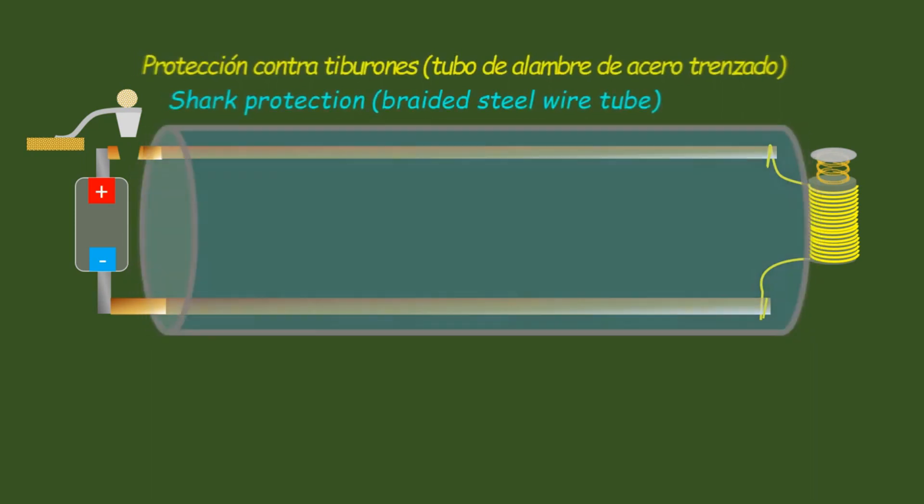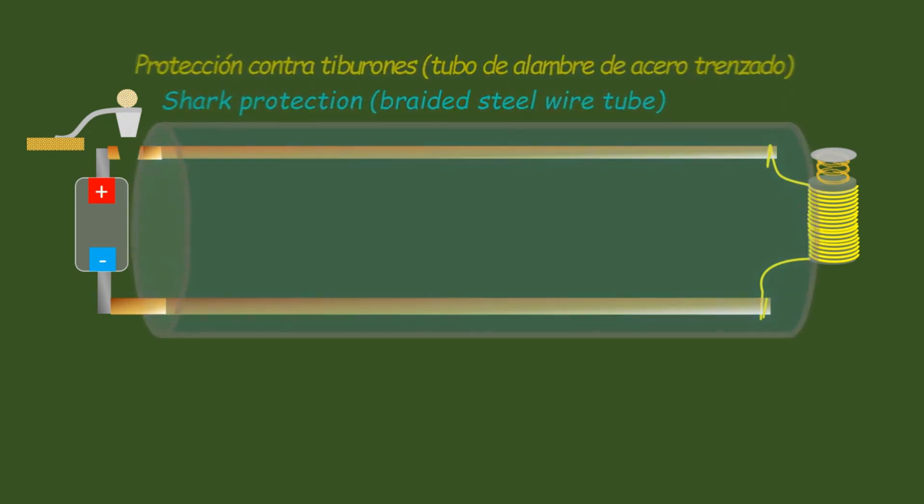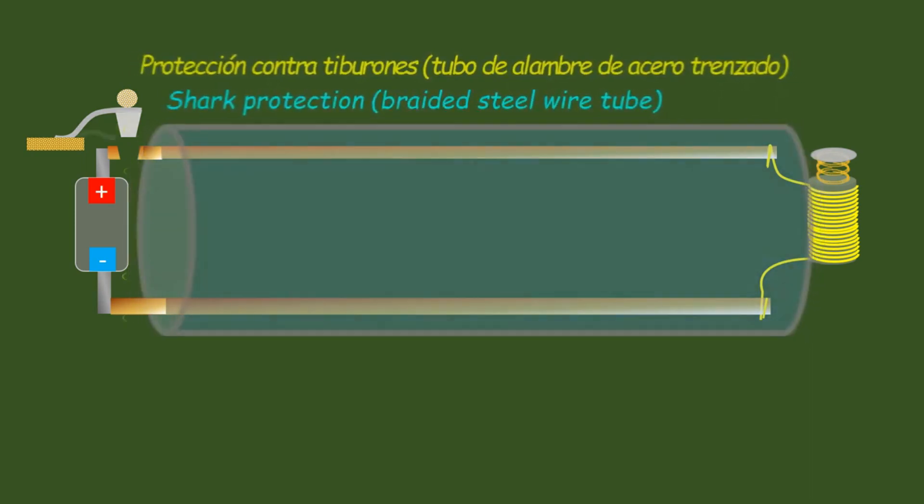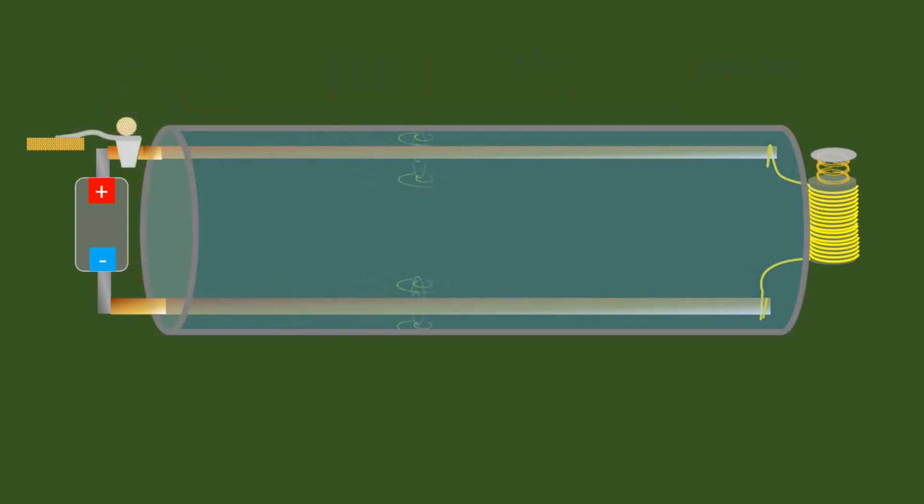The transmission problem mentioned for the first coaxial cable is probably related to the wave deformation due to the presence of steel wires surrounding the pair used to transmit the signal.